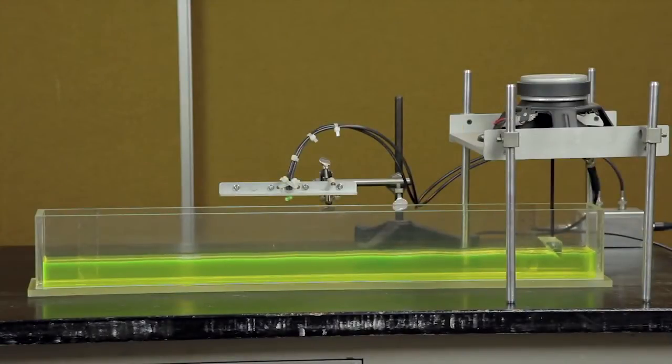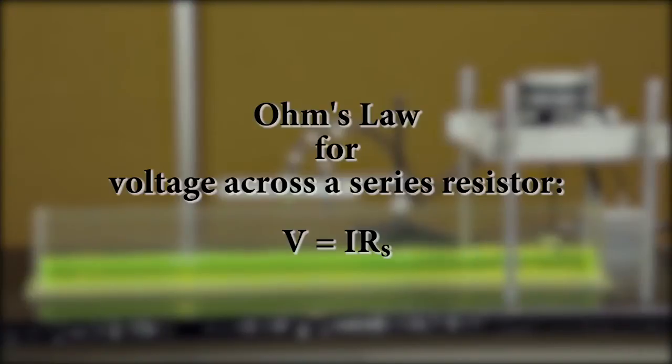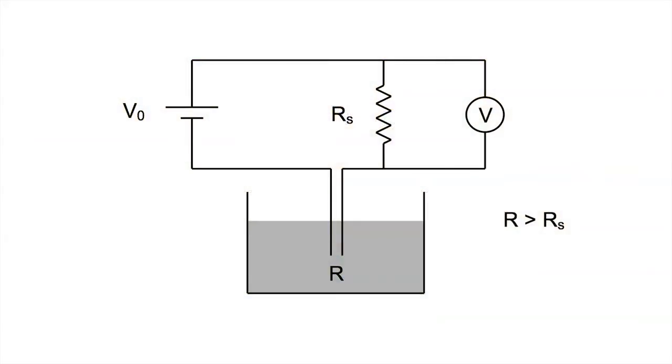It can be shown with Ohm's law that the voltage across the series resistor varies linearly with the depth of the wires if the series resistance is chosen to be small compared to the typical resistance between the sensor wires. This is just what is desired for a sensor.